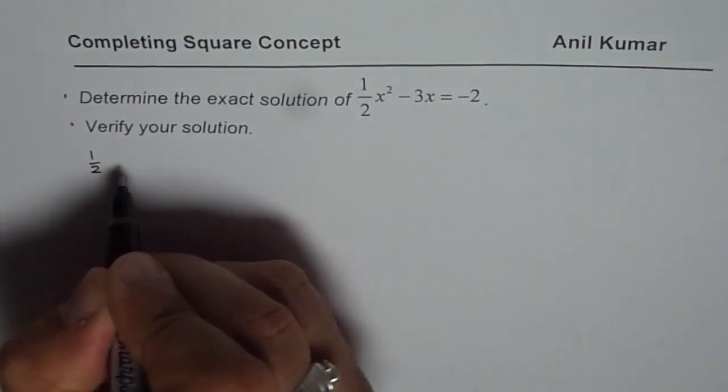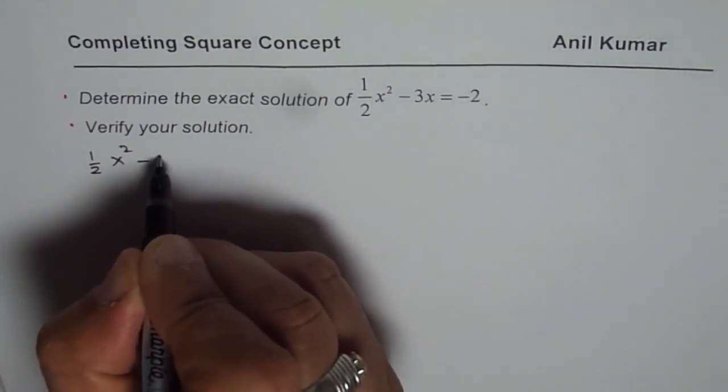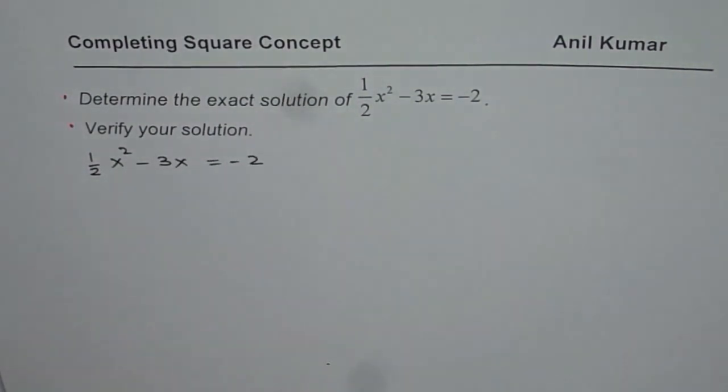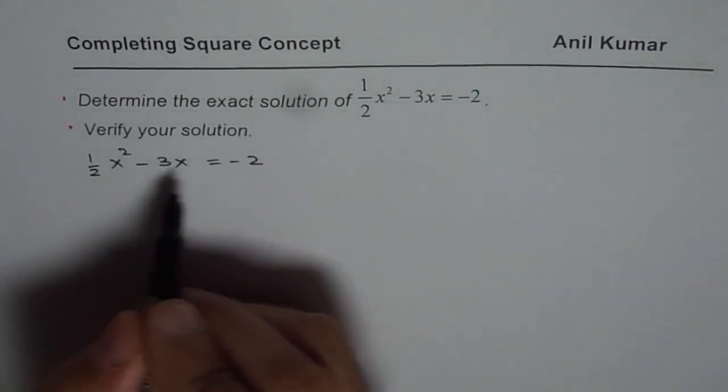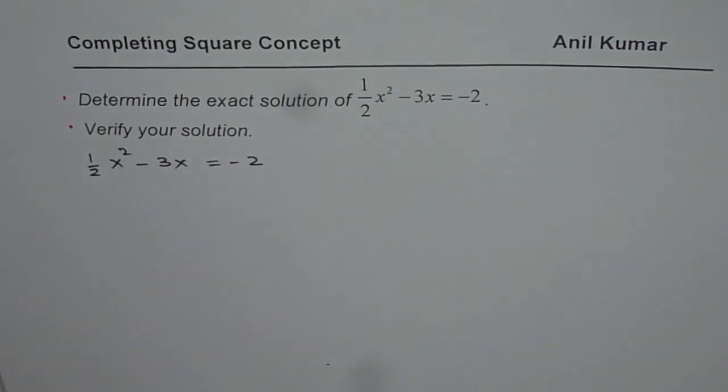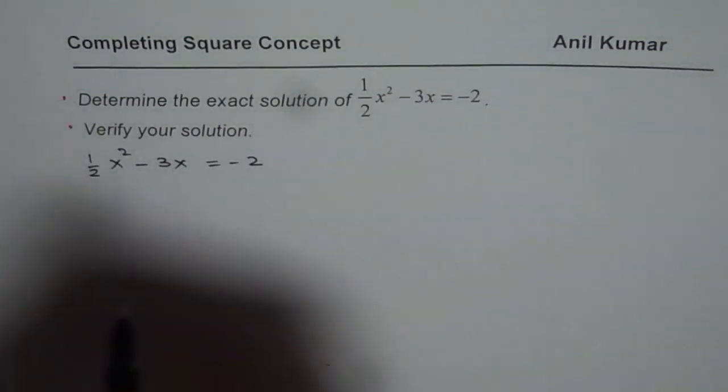The equation given to us is half x square minus 3x equals to minus 2. Some of you can pause the video, answer and then look into my suggestion. Now first step I prefer is get rid of this fraction which we can if I multiply every number by 2.